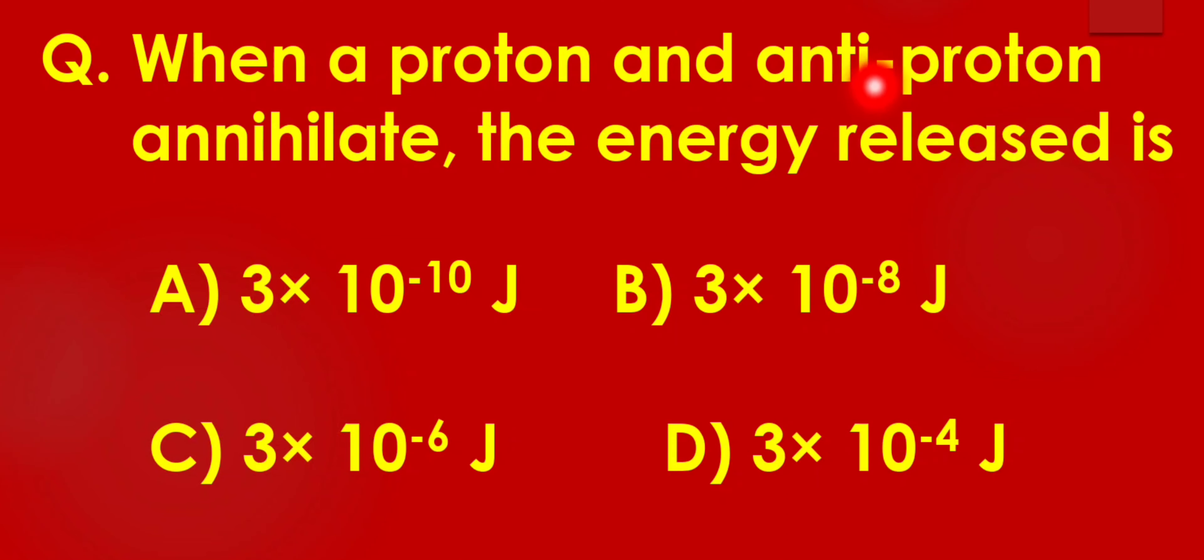When a proton and anti-proton annihilate, the energy released is: A) 3 × 10⁻¹⁰ J, B) 3 × 10⁻⁸ J, C) 3 × 10⁻⁶ J, D) 3 × 10⁻⁴ J.